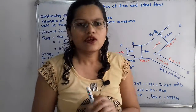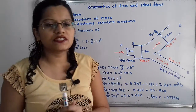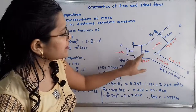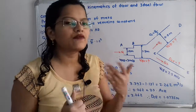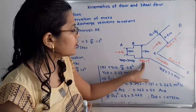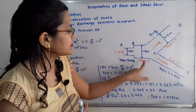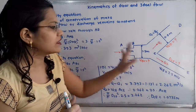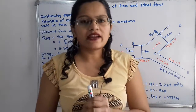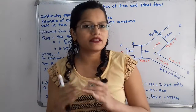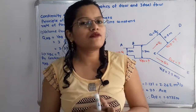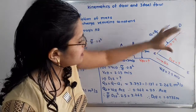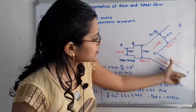Now we will move to the next section BC. For BC, the diameter is given as 1.5 meter and we have to find out what is the velocity at BC, so V_BC equals question mark. It is given that at point C the pipe branches, so we show two branches from point C: one is CD and the other is CE.